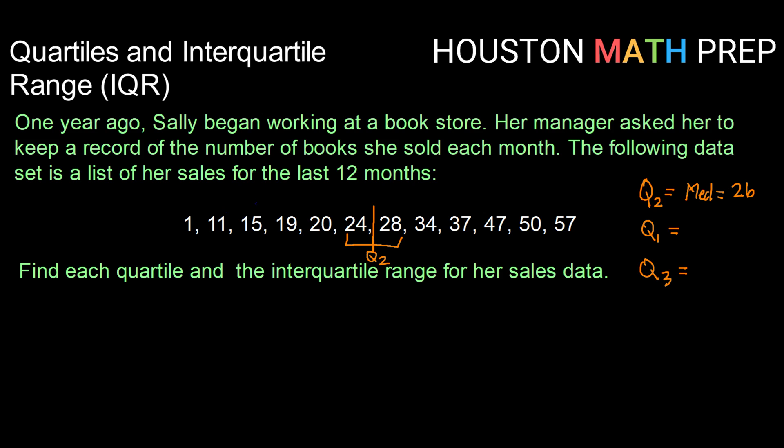So counting 1, 2, 3 values, 15 and 19 will represent my two central values in the bottom half. Since there are two of them, I need to take their average to find q1. So the average of 15 and 19 will be 17. So q1, or quartile 1, is 17.